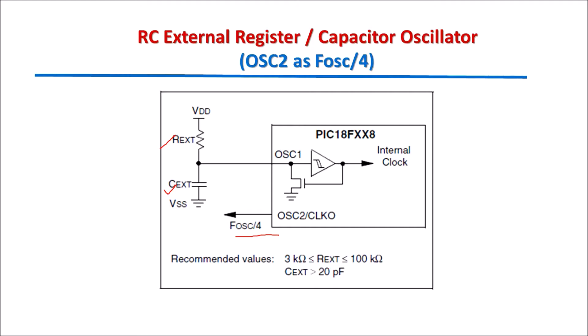We have to consider the tolerance of external R and C components. The recommended values for REXT are between greater than 3 kilohms and less than or equal to 100 kilohms, and the value of the external capacitor should be greater than 20 picofarads. In this type of oscillator, external R and C are connected at oscillator 1 terminal, and at oscillator 2 terminal, the oscillator frequency divided by 4 clock is available, which can be used for testing or connected to other circuits.